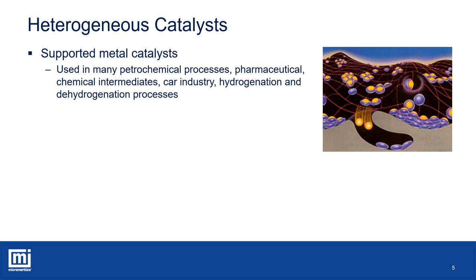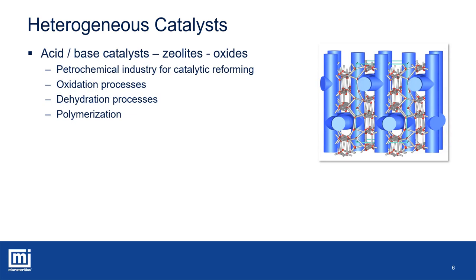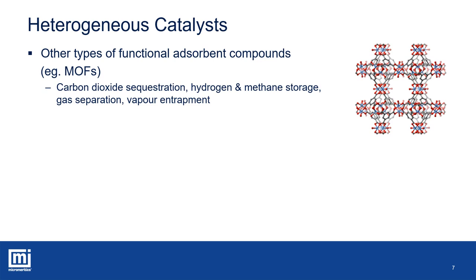Acid-base catalysts are mainly metal oxides or mixed oxides, like zeolites. These catalysts are stable at high temperatures and mainly used in petrochemical processes for catalytic reforming, dehydration, oxidation, polymerization, and more. Metal-organic frameworks are synthesized compounds where metal ions are coordinated to organic ligands to generate porous three-dimensional structures. MOFs are currently studied for gas storage for hydrogen and methane, for carbon dioxide segregation, gas separation, and catalysis.